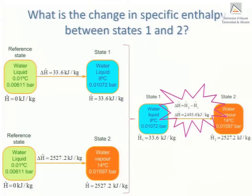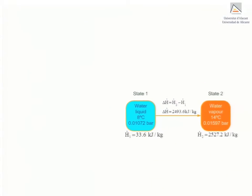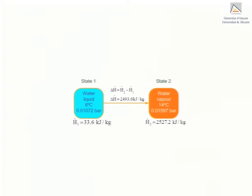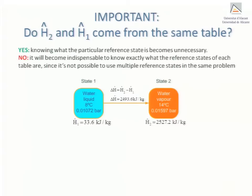We now need to mention a very important point. If the data used in a calculation comes from the same steam table, then knowing what the particular reference state is becomes unnecessary, because it won't be used directly. If, on the other hand, enthalpy data from steam tables based on different reference states are used, it will become indispensable to know exactly what the reference state of each table is, since it is not possible to use multiple reference states in the same problem. This can lead to very serious mistakes.